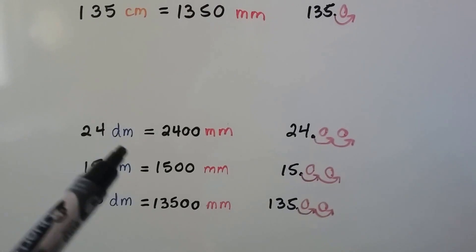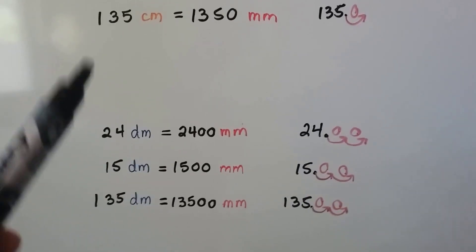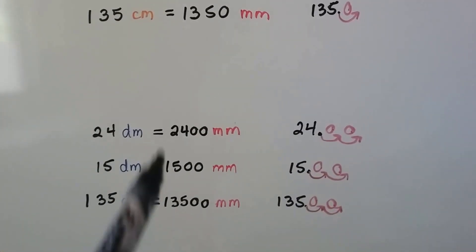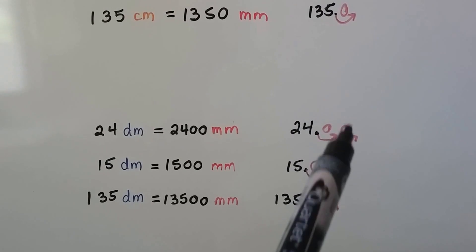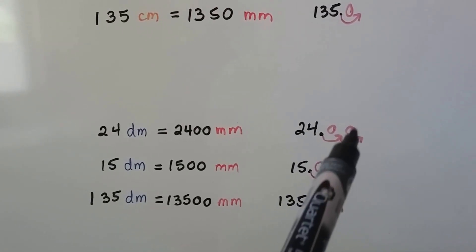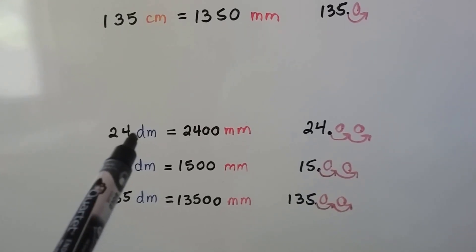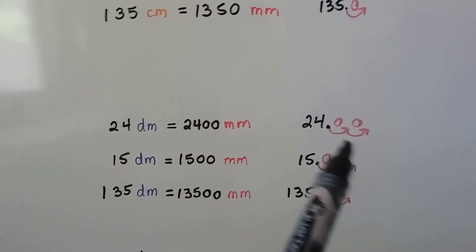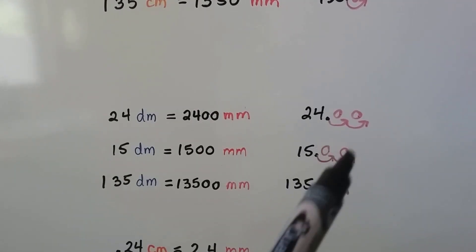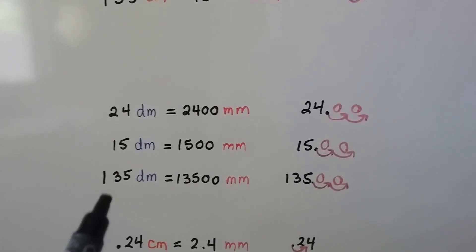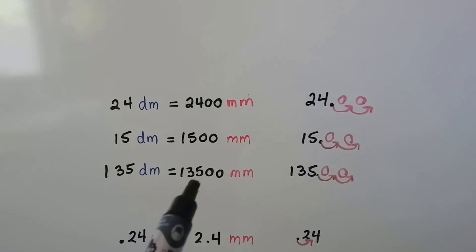To go from 24 decimeters to millimeters, that's two hops away because centimeters sit between them on the list — decimeter, centimeter, then millimeter. So we take the invisible decimal point behind the 4 and move it two hops to the right, adding two zeros as placeholders to get 2,400 millimeters. Fifteen decimeters gives 1,500 millimeters, and 135 decimeters gives 13,500 millimeters.